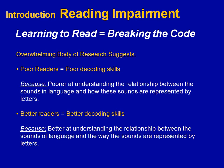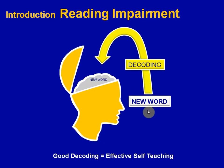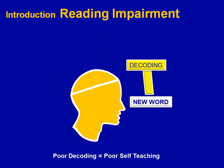The opposite relationship also exists. Better readers tend to be much better at decoding ability and have a much better understanding of the way that letters represent the sound structure in the language. This ability to decode words seems to be very closely related to one's ability to teach oneself new words when reading. An impairment in one's ability to decode unfamiliar words when reading leads to an inability to teach oneself new words when reading.